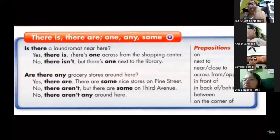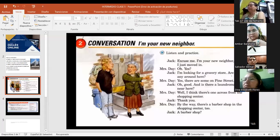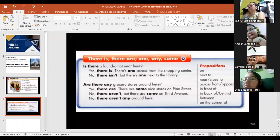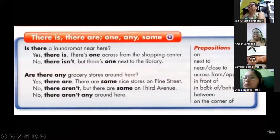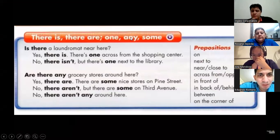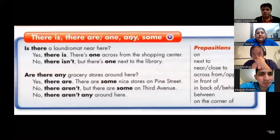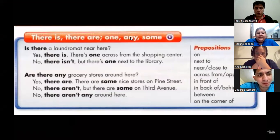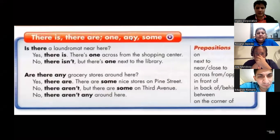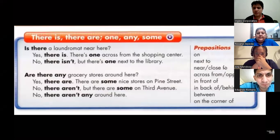Any questions? Someone asks: do these prepositions always go with is or are? Yes, exactly — always the verb to be. For example: where is the shopping center? And you can say: next to McDonald's. But in a full sentence, always the verb to be. We also have many for countable nouns — used for negatives, questions, and affirmatives. There aren't many pictures — no hay muchos. Many means muchos or muchas. A lot of indicates the same — much or many.